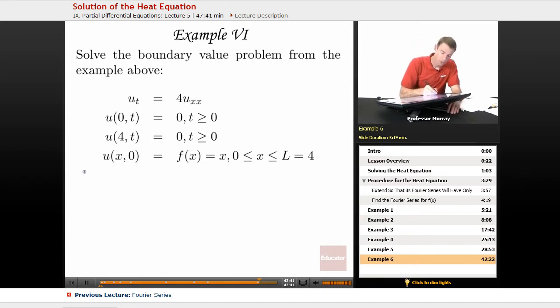Let me remind you what we figured out earlier. We figured out in example 5 that we found those coefficients bn, and what we got was negative 1 to the n plus 1 times 8 over n pi.